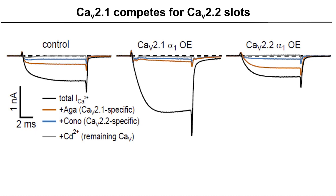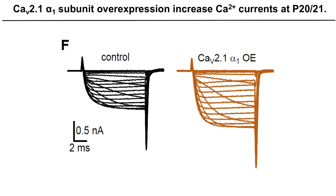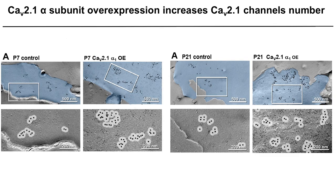However, we did not see the opposite with CAV2.2 overexpression. At the later time point after hearing onset, overexpression of CAV2.1 alpha-1 also dramatically increased total calcium currents, while CAV2.2 alpha-1 subunit overexpression did not. Using SDS freeze-fracture replica immunolabeling EM, we physically counted the number of CAV2.1 channels and showed that the increase in CAV2.1 currents corresponded to an increased number of CAV2.1 channels.